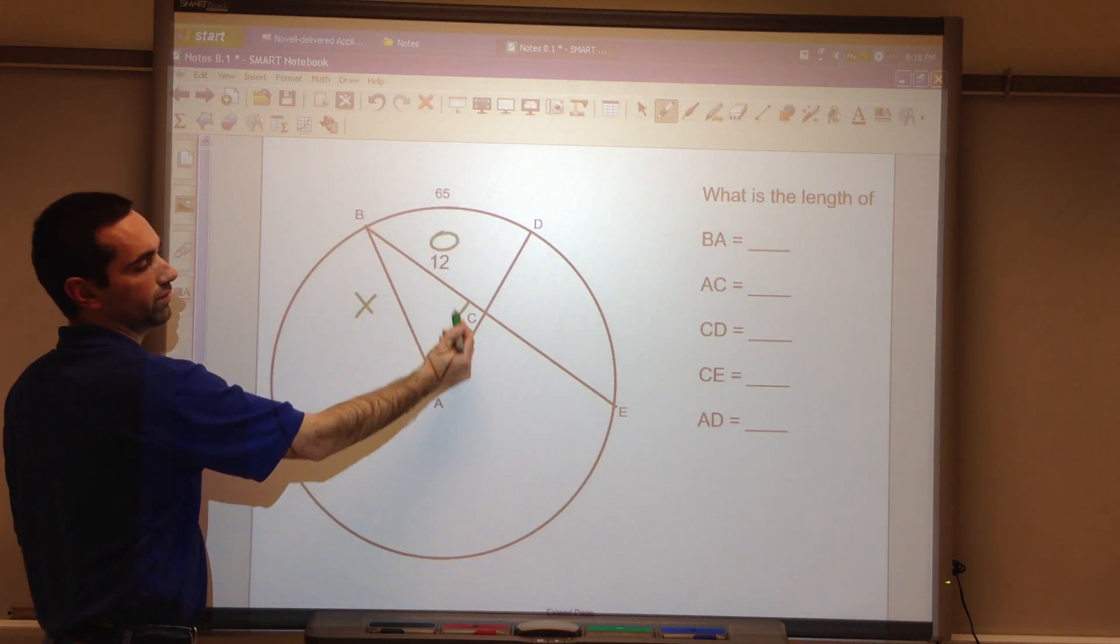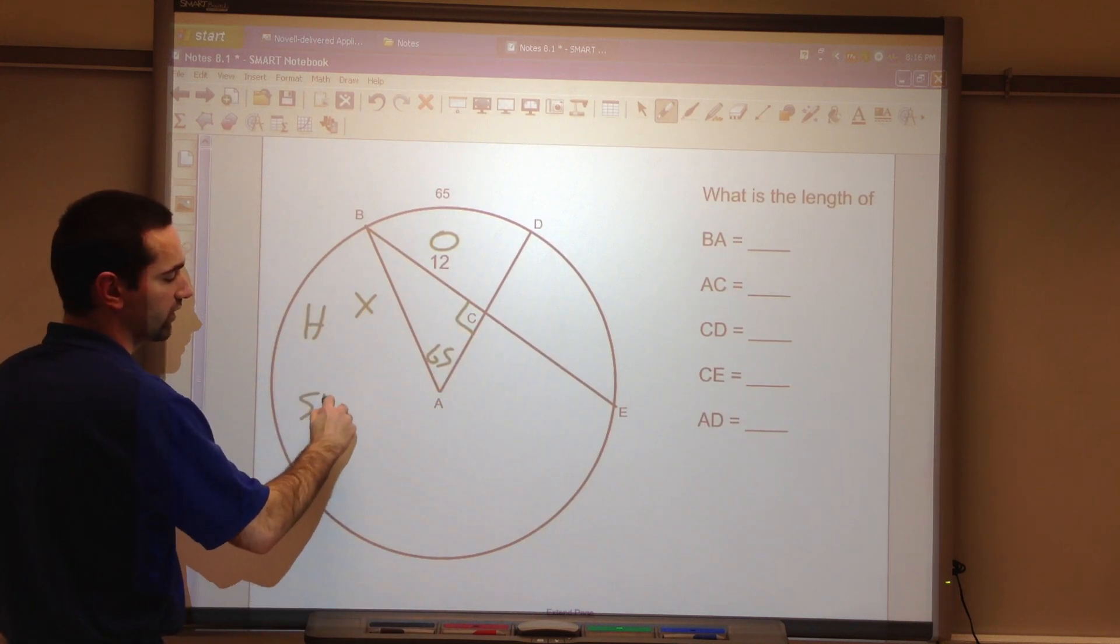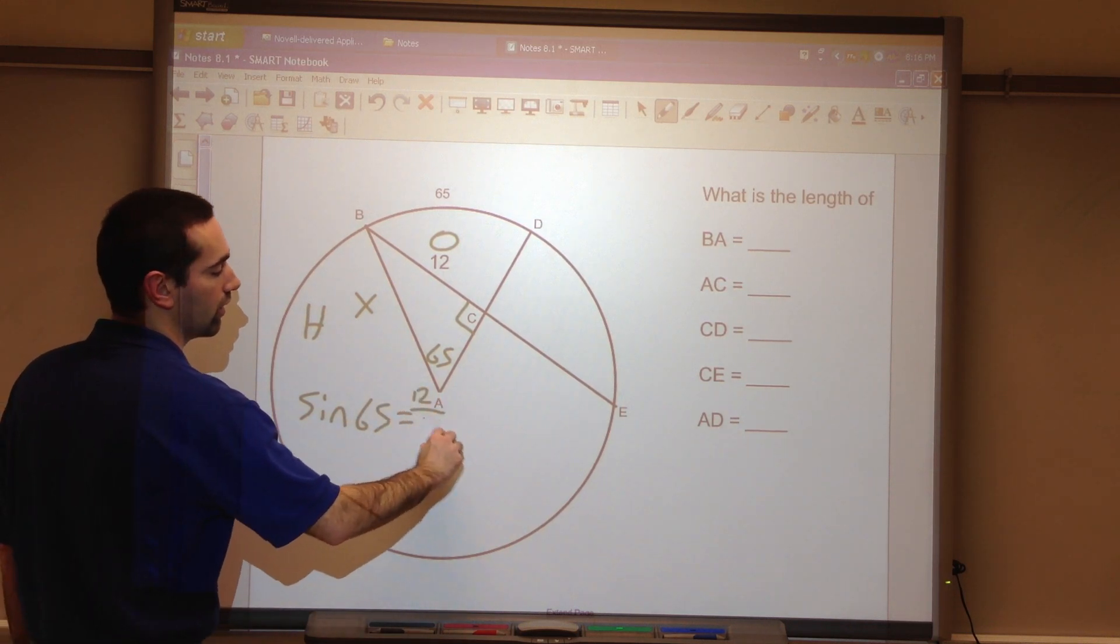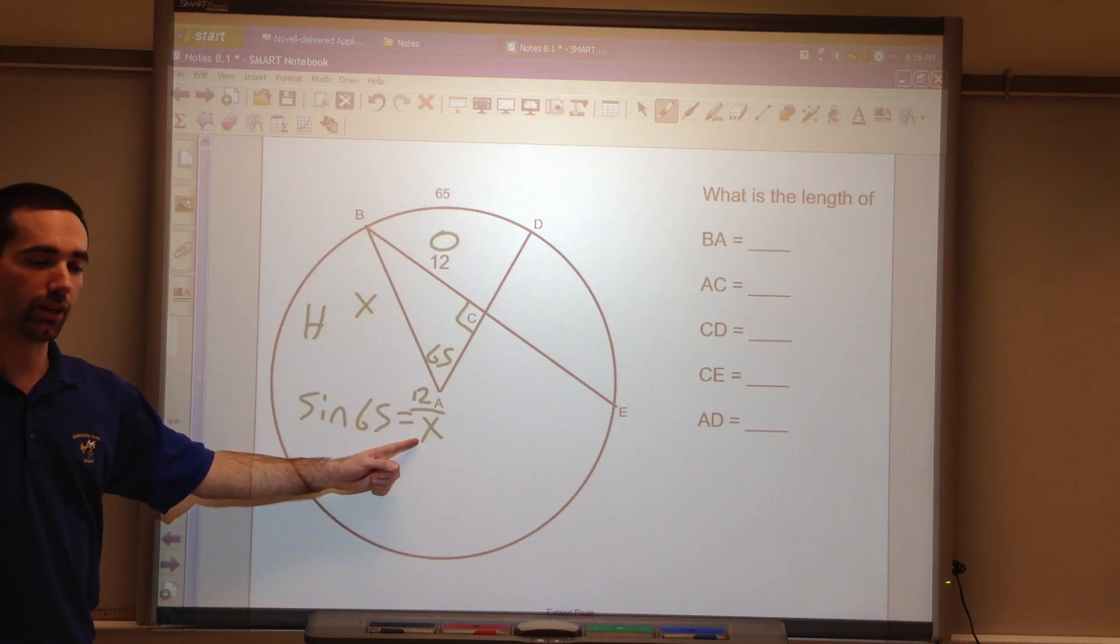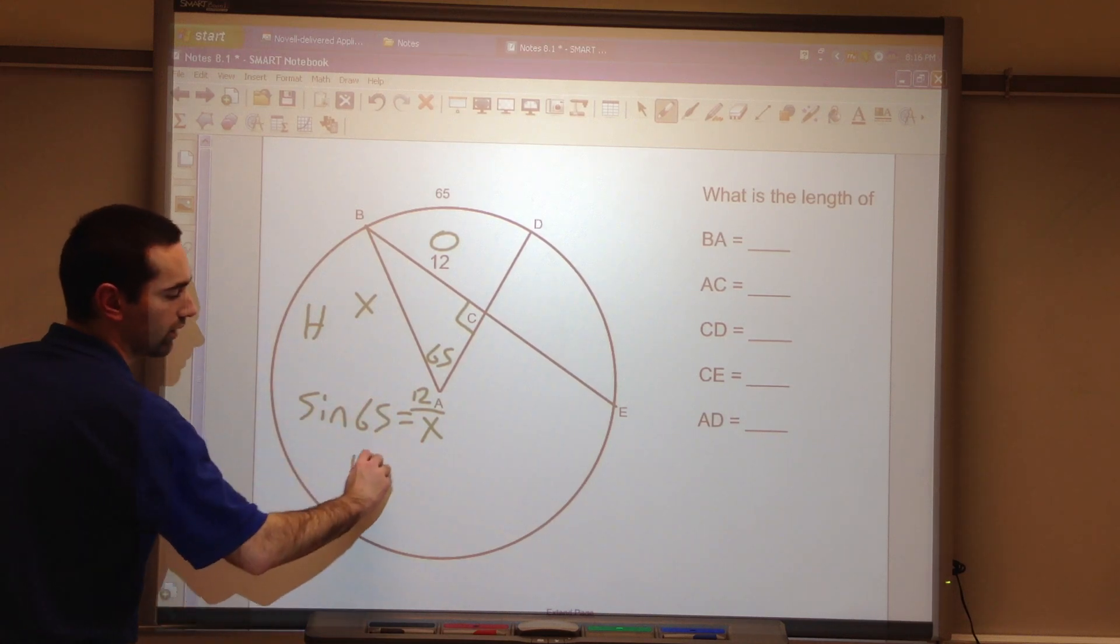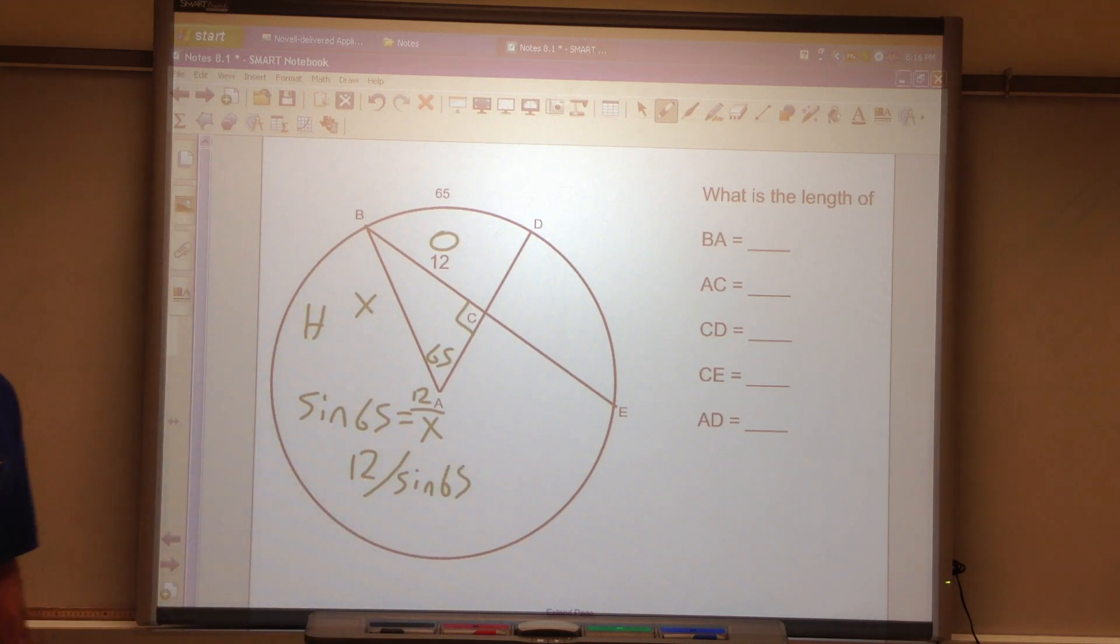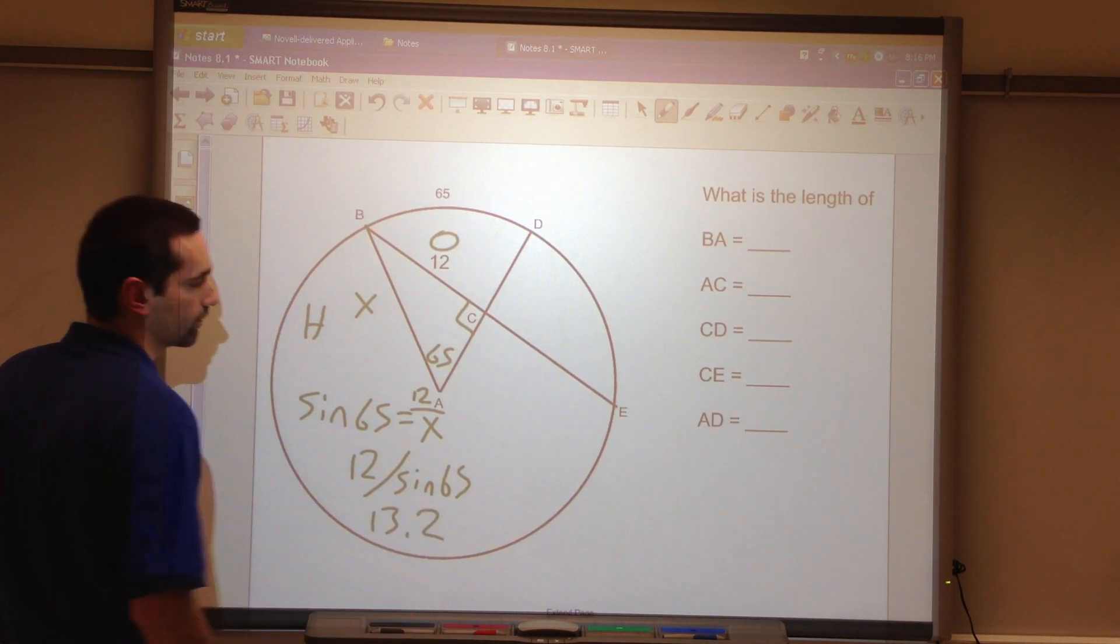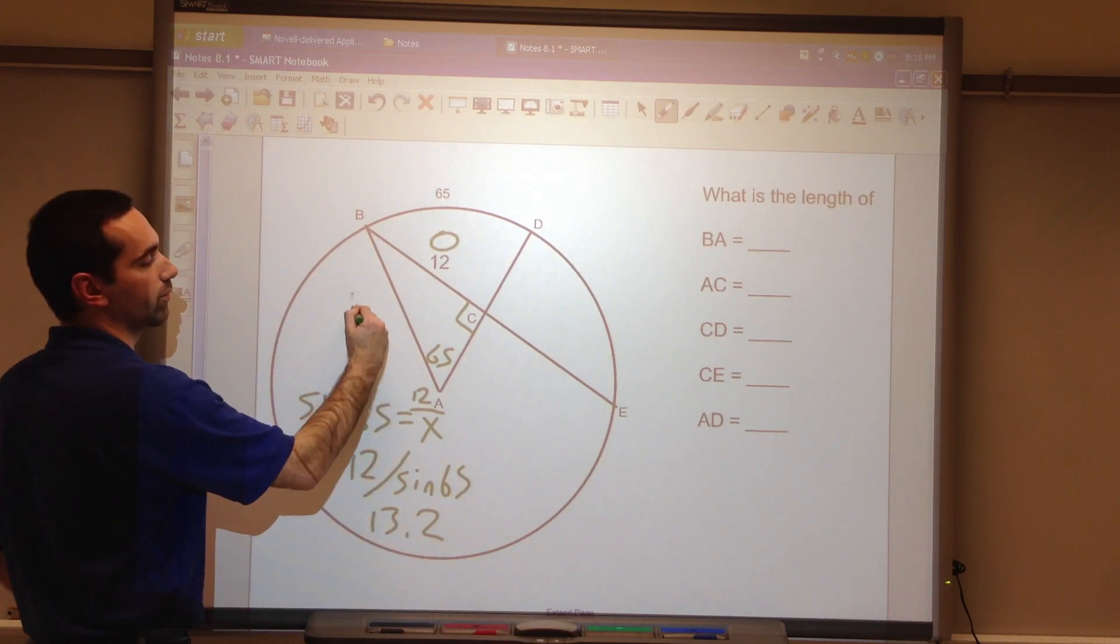Opposite. Hypotenuse. Sine. Sine of the angle equals the opposite over the hypotenuse. X is the denominator. We will divide. 12 divided by sine 65 is 13.2. So this is now 13.2.